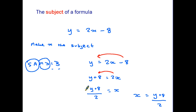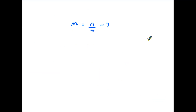As an additional note, I am rearranging by moving things physically from side to side. Some teachers perform the same function to both sides of an equation — that method is equally valid. Now let's take a look at a slightly more complicated example. Here we have m equals n over 4 minus 7, so m is currently the subject and we need to rearrange it so that n becomes the subject.